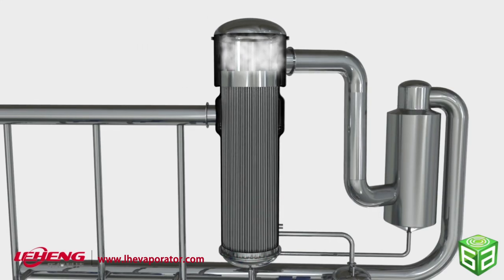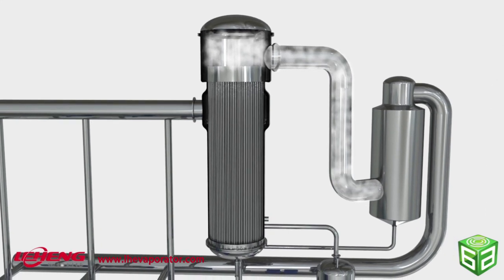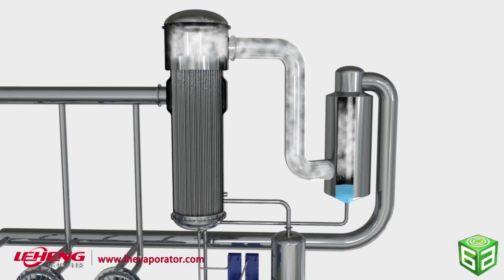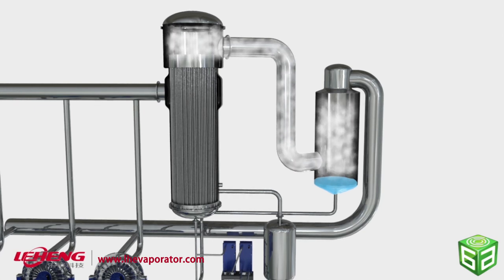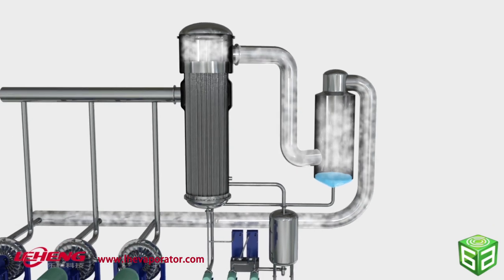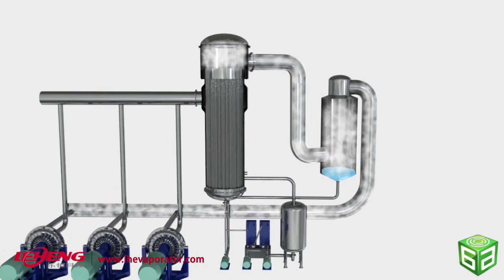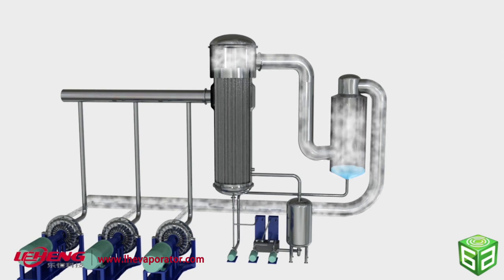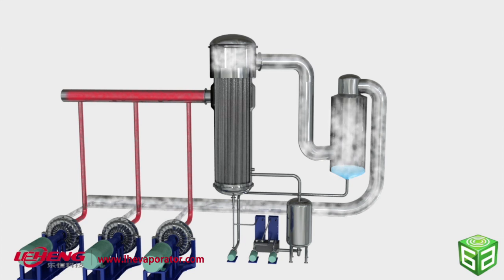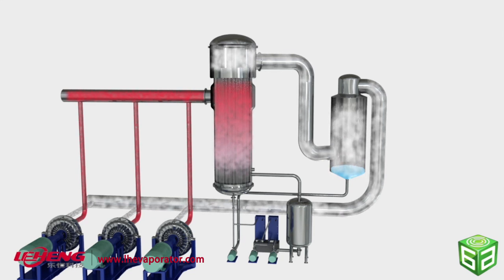The liquid-gas mixture flows into the separator at high speed. Non-evaporated liquid condenses to the bottom of the separator and is circulated back to the heat exchanger. Steam generated in the process is directed to the compressor to increase its temperature and pressure for reuse as a heat source.